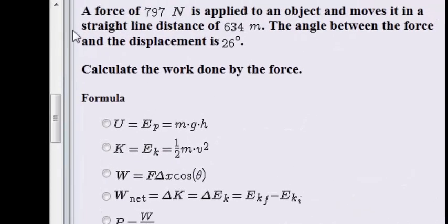This is a similar question. A force of 797 newtons is applied to an object and moves it in a straight line distance of 634 meters. The angle between the force and the displacement is 26 degrees.